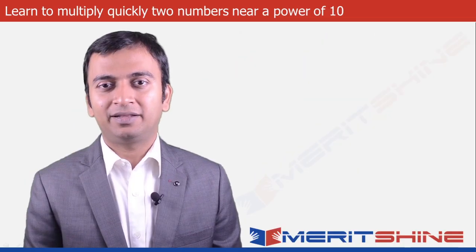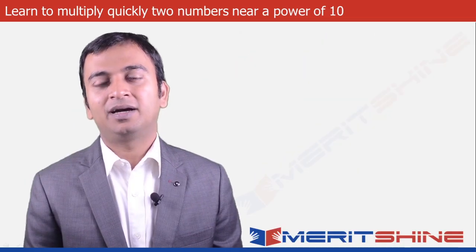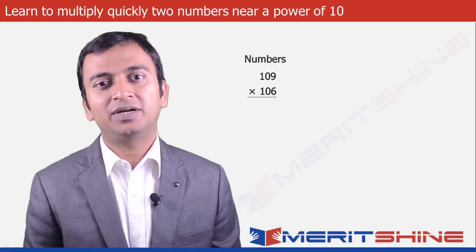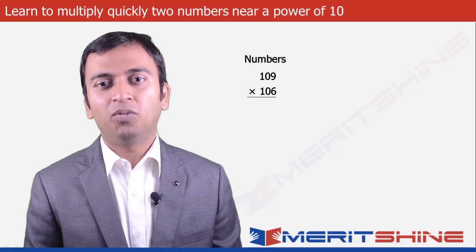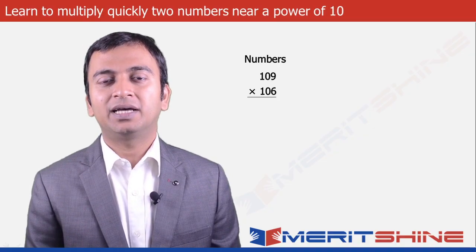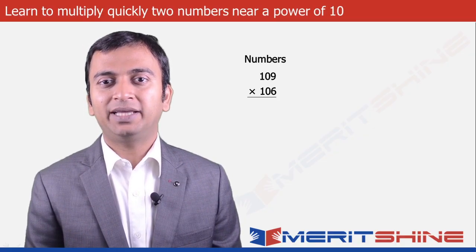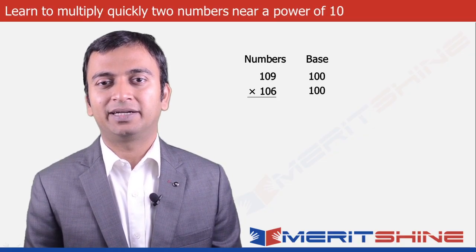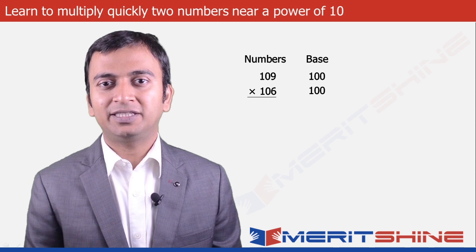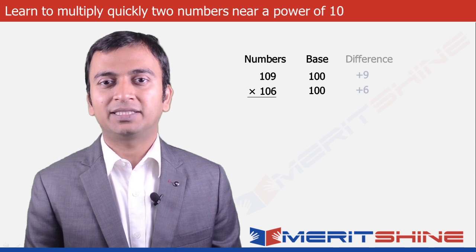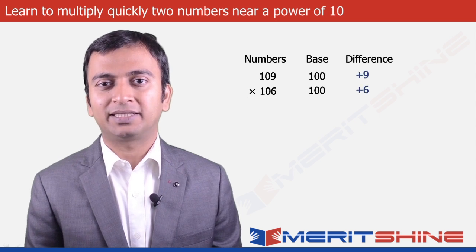Let us take another example: 109 into 106. Both these numbers are close to 100. So our base would be 100 and the differences would be plus 9 and plus 6.